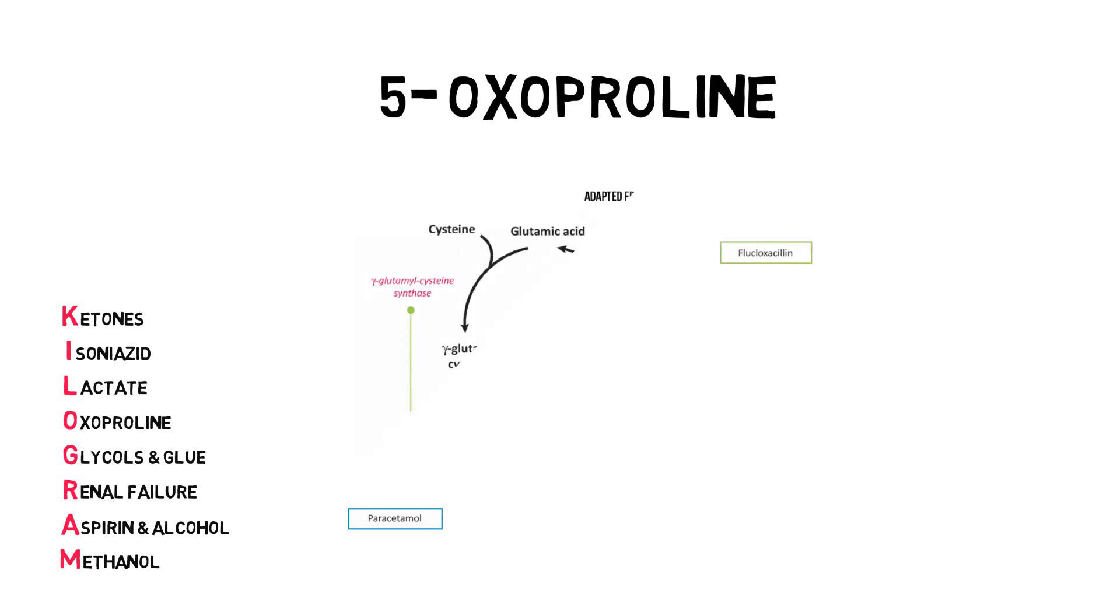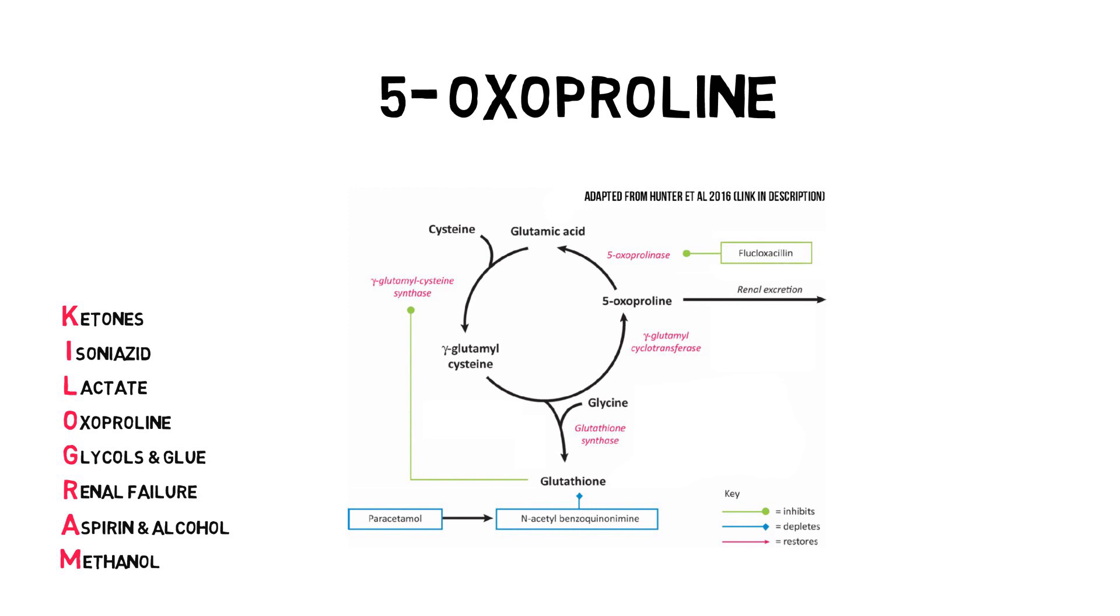5-oxoproline is produced in the glutathione production cycle, known as the gamma-glutamyl cycle. As paracetamol causes glutathione depletion, this cycle will produce more oxoproline. Flucloxacillin, a commonly used beta-lactam antibiotic, inhibits the breakdown of oxoproline to glutamic acid, causing more oxoproline to be accumulated.